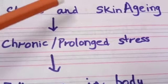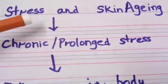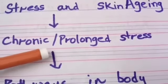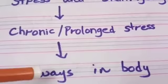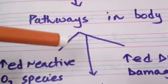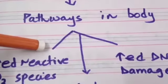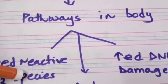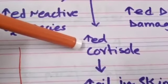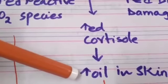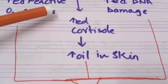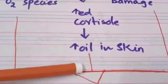Stress and skin aging: how stress affects skin aging. Chronic or prolonged stress can lead to certain changes in the body, like activation of certain pathways, which can lead to increased production of reactive oxygen species and free radicals, increased DNA damage, and increased cortisol levels, which leads to oily skin. All these changes cumulatively lead to skin aging.